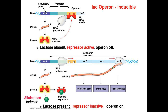By itself, the operon is switched on. However, RNA polymerase can be blocked by a repressor protein that binds specifically to the operator of this operon. The repressor is encoded by another gene, which is expressed at all times. However, if this is the case, then how come the operon isn't always turned off?